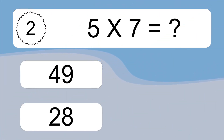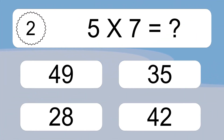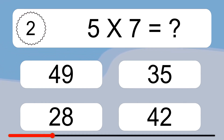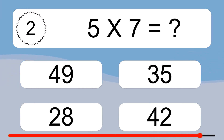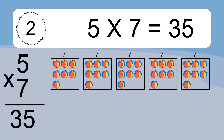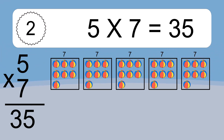Five times seven equals what? Five times seven equals thirty-five. We have five boxes, and each box has seven colorful balls inside. If you count all the balls in all the boxes together, you will have five times seven balls. This equals thirty-five balls.